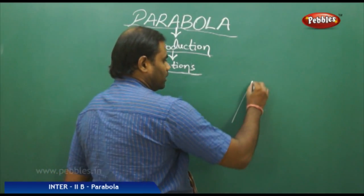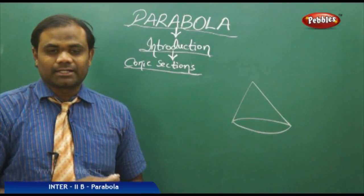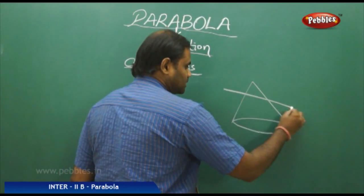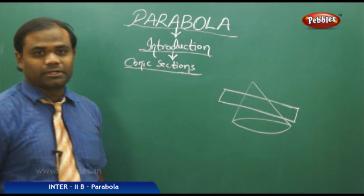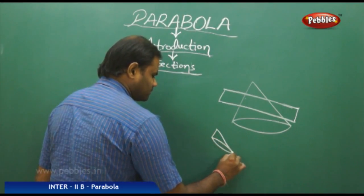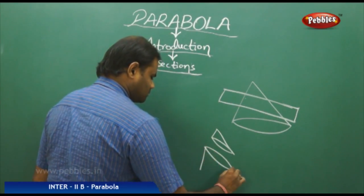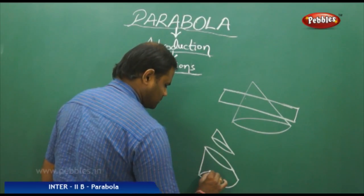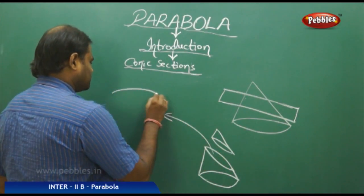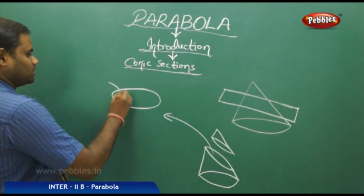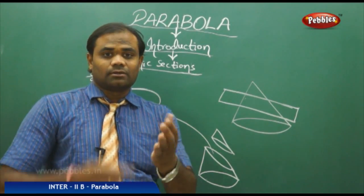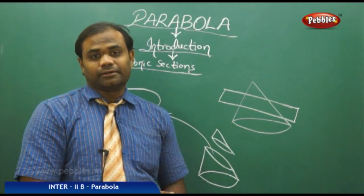If I cut the cone other than perpendicular — that is, other than at 90 degrees — but at a slant in a different manner than for a parabola, I get a shape that is somewhat egg-shaped. This shape is called an ellipse. An ellipse is an oval shape obtained when the cone is cut at an angle other than 90 degrees in this particular manner.